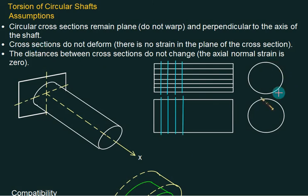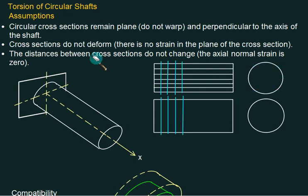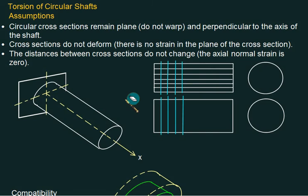This cross-section will not deform. That is, after you apply the torque the section will not change shape — the circular shape will remain circular. The distance between the cross-sections does not change; it will not deform axially. It will deform axially only if you pull it in that direction. These are the first assumptions.